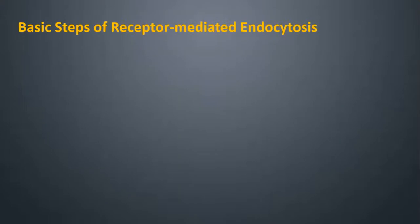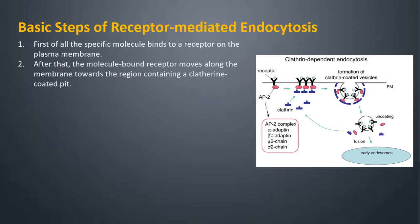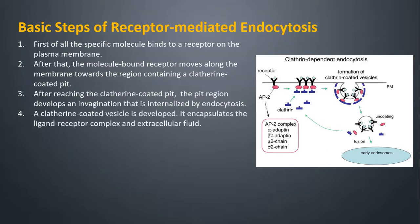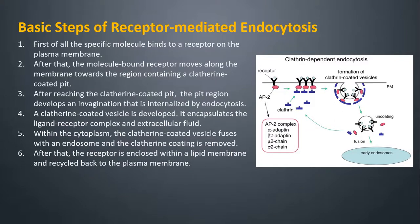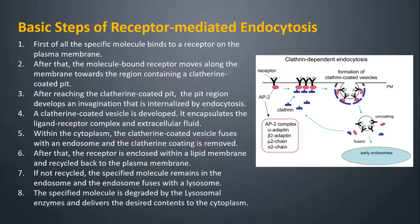Basic steps of receptor-mediated endocytosis: First, the specific molecule binds to a receptor on the plasma membrane. After that, the molecule-bound receptor moves along the membrane towards the region containing a clathrin-coated pit. After reaching the clathrin-coated pit, the pit region develops an invagination that is internalized by endocytosis. A clathrin-coated vesicle is developed, encapsulating the ligand-receptor complex and extracellular fluid. Within the cytoplasm, the clathrin-coated vesicle fuses with an endosome and the clathrin coating is removed. After that, the receptor is enclosed within a lipid membrane and recycled back to the plasma membrane. If not recycled, the specified molecule remains in the endosome, which fuses with a lysosome, and the molecule is degraded by lysosomal enzymes, delivering the desired contents to the cytoplasm.